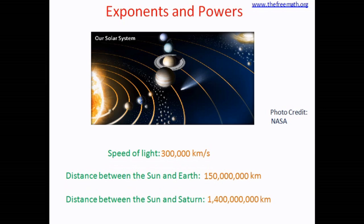How about now — is it better? Yes, this is a little better. Now you can say that the speed of light is 300,000 kilometers per second, and the distance between the sun and earth is 150 million kilometers, and so on. But can we make it even better? Can we make it easier than this?